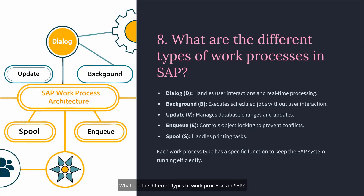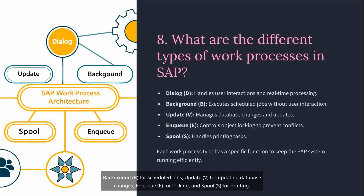Question 8: What are the different types of work processes in SAP? There are several types: Dialog (D) for user interaction, Background (B) for scheduled jobs, Update (V) for updating database changes, Enqueue (E) for locking, and Spool (S) for printing. Each one has its own function to keep the system running efficiently.